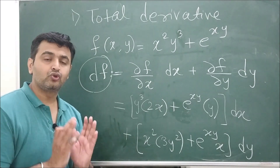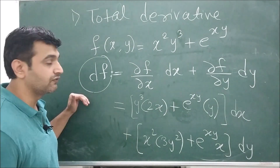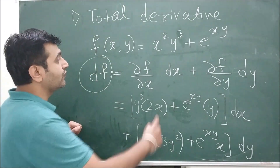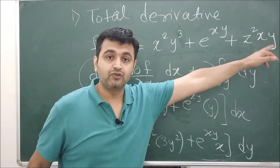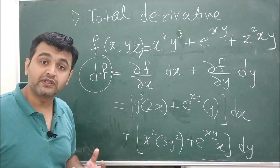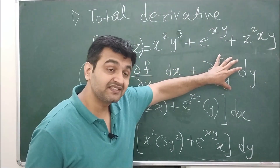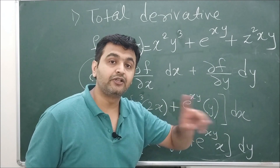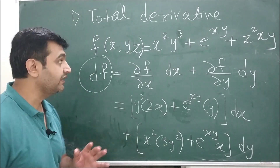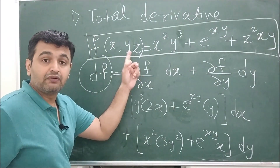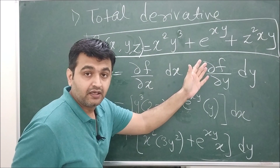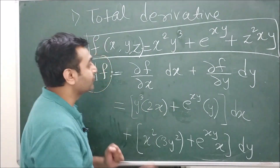For now, just make sure you know how to find the total derivative of a function. For three variables — suppose you add z²xy to the function — you define the total derivative with three terms: the partial with respect to x times dx, plus partial with respect to y times dy, plus partial with respect to z times dz. As a first comment exercise: find the total derivative of f(x,y,z) = x²y³ + e^(xy) + z²xy. You can pause the video and comment right now.